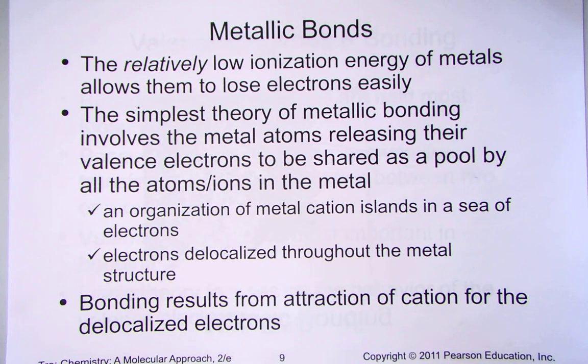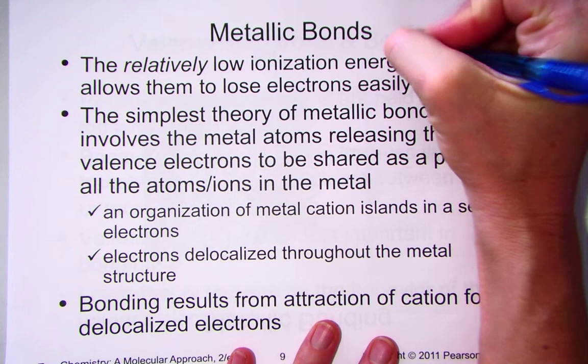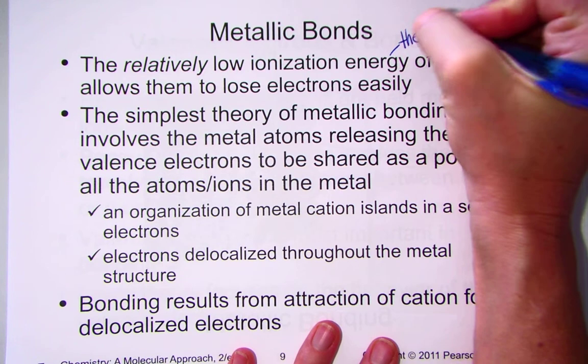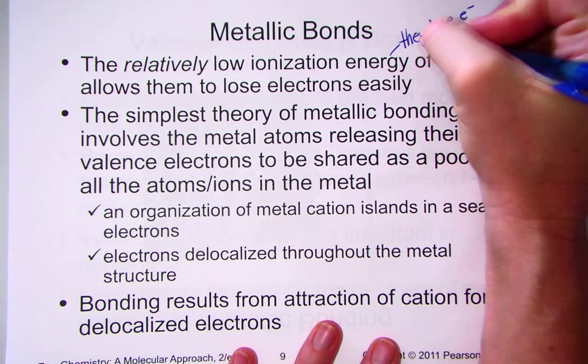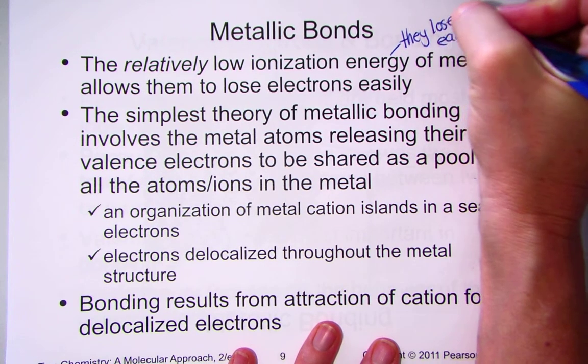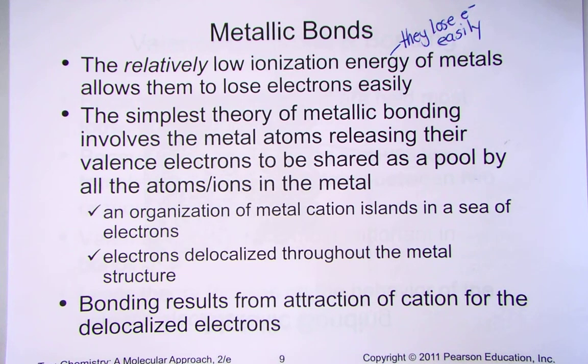The third category mentioned in our text are called metallic bonds. Remember that metals have low ionization energy. They lose electrons easily. The low ionization energy of the metals allows them to lose electrons and form a simple sea or pool of electrons shared by many atoms nearby.